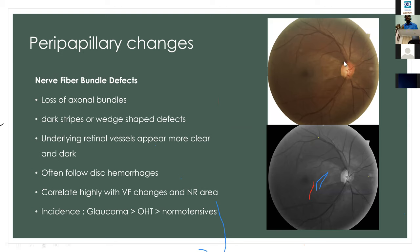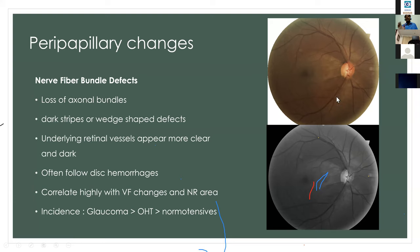Regarding peripapillary changes, nerve fiber layer bundle defects are seen as wedge-shaped defects or absence of normal retinal striations — witnessed as dark zones. Blood vessels appear more clear and bright because of defects in the superficial RNFL. There will be corresponding thinning of the neuroretinal rim. In red-free photographs, these defects are clearly witnessed. If visual fields are done in such a patient, double arcuate scotomas are highly likely. RNFL defects correlate highly with visual field changes, and this is more common in glaucoma than in ocular hypertensive or normotensive patients.